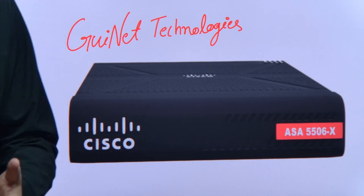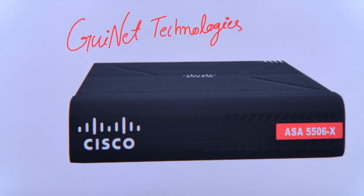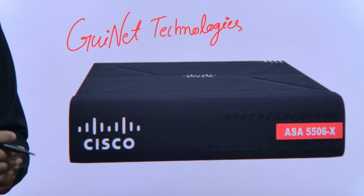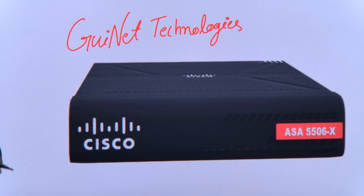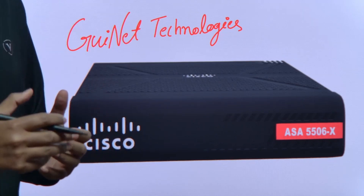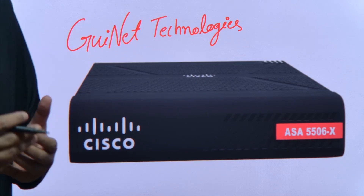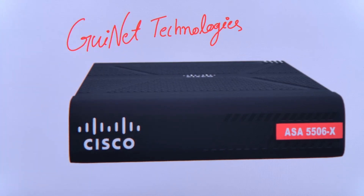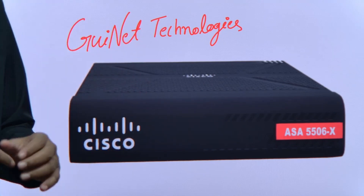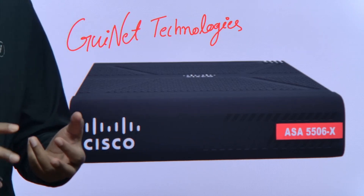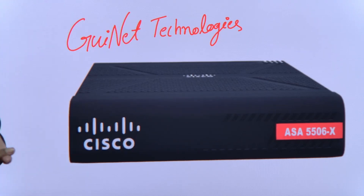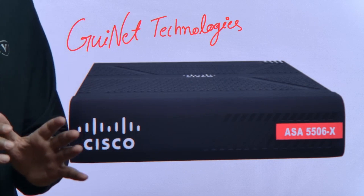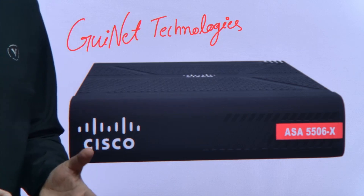We will try to understand how this firewall physically looks, what different ports are available, how to supply power, and what kind of features this firewall provides in real-time production for protecting your network. I will explain the datasheet features including application control visibility, next-generation IPS, concurrent connections supported, IPS maximum throughput, rack unit dimensions, and environmental temperature.